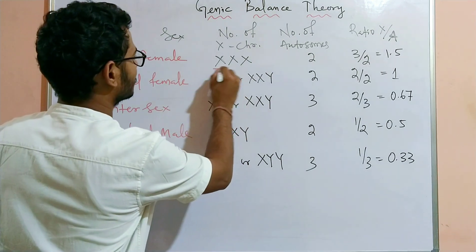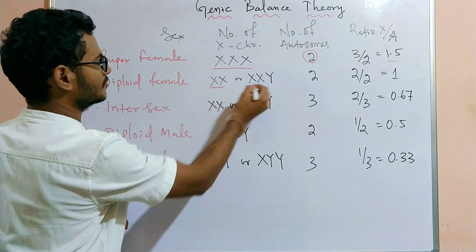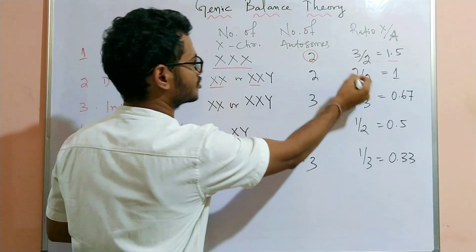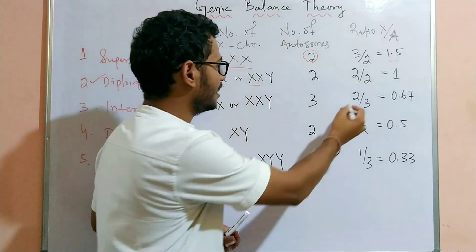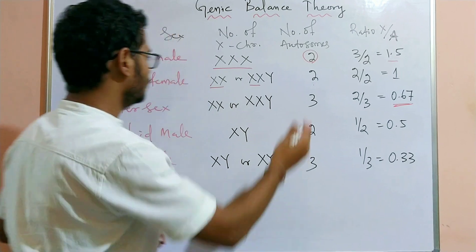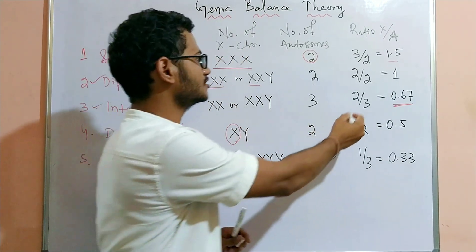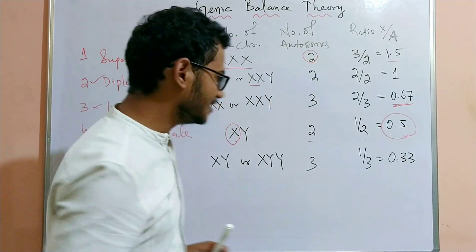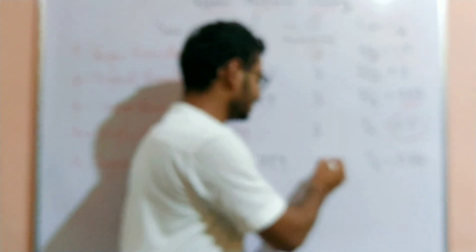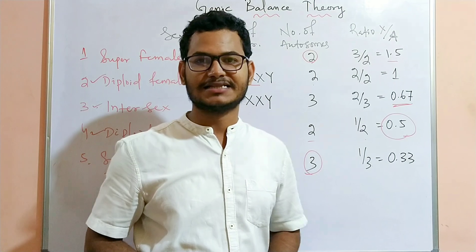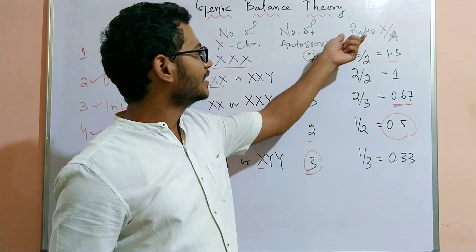For example, when the total number of X chromosomes is 3 and autosomes is 2, the ratio is 3/2 = 1.5 — super female. With 2 X chromosomes and 2 autosomes, 2/2 = 1 — diploid female. With 2 X chromosomes and 3 autosomes, 2/3 = 0.67 — intersex. For diploid male, 1 X chromosome divided by 2 autosomes = 0.5 — diploid male. For super male, 1 X chromosome divided by 3 autosomes = 0.33 — super male.